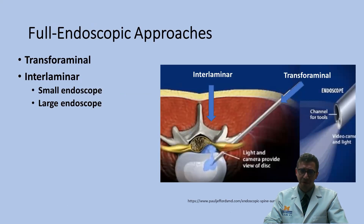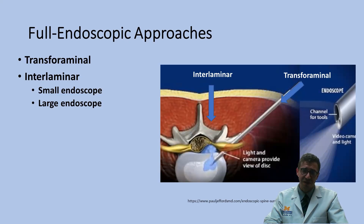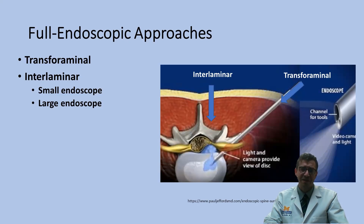There are two types of endoscopic approaches. The interlaminar approach is similar to approaches taken through an open or minimally invasive microscopic procedure. But what the endoscope really adds is a transforaminal approach, which gets to the lesion — in this example, a lateral recess disc herniation — through a completely different approach that minimizes the need for a laminectomy. You can go straight to doing a discectomy without removing any bone or disrupting the ligaments.